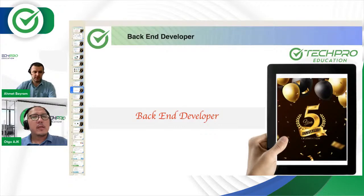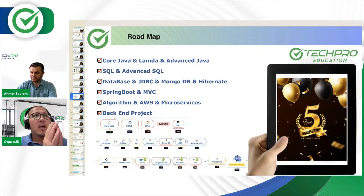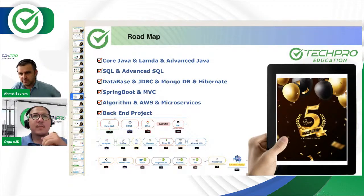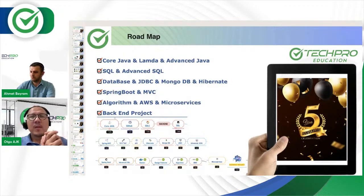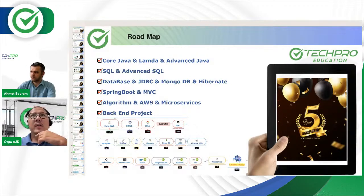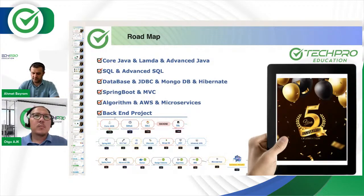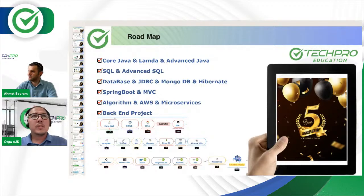The back-end side is the part which is not visible. As a back-end developer, your responsibilities include storing data, processing data, and being able to send requested data to the front-end side. As a back-end developer, we start with Java as the main programming language. After that, there are database tools like SQL and PostgreSQL that you need to learn.